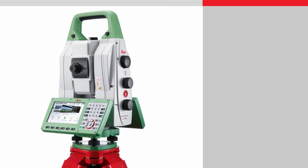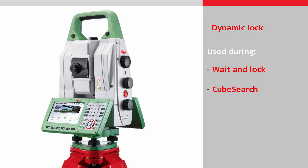There are two different search methods which use dynamic lock: one is when using wait and lock, and the other is during a cube search. Note that dynamic lock is not used during a power search.